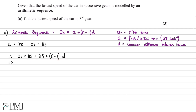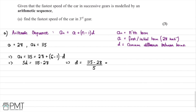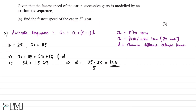So 5D is going to be equal to 115 minus 28. Therefore D is going to be equal to 115 minus 28 divided by 5. Putting this into the calculator, this comes out as 17.4. We now have a general formula — we know what A is and we now know what D is, so we can use these values to work out what the third term is going to be.